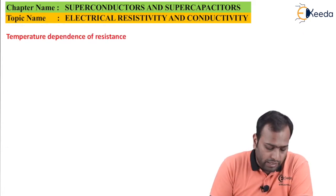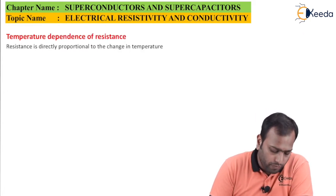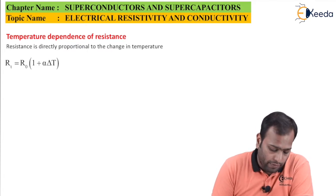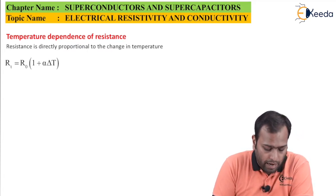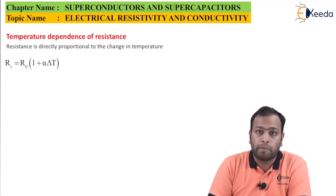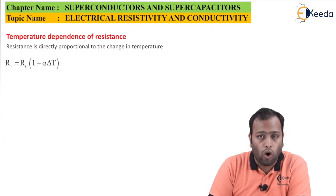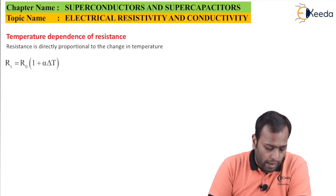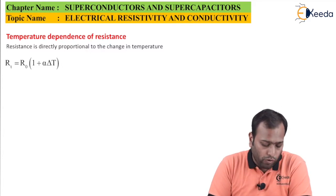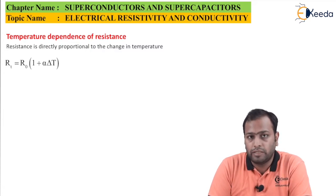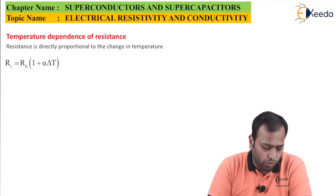Let's see the temperature dependence of resistance. We know that resistance is proportional to the change in temperature. We have an equation RT equals R naught into 1 plus alpha delta T. RT is the resistance at particular temperature T, R naught is the resistance at temperature 0, alpha is the temperature coefficient of resistance, and delta T is the difference between the temperature from 0 to T.